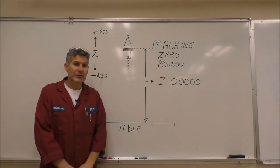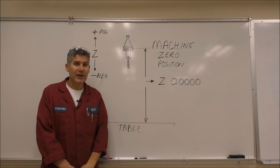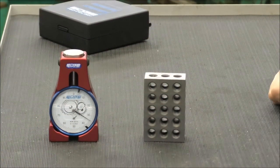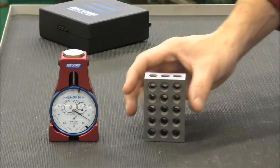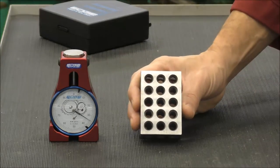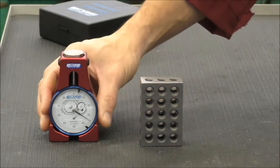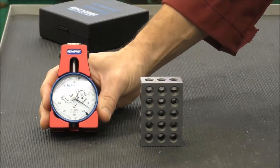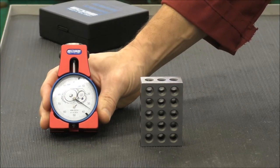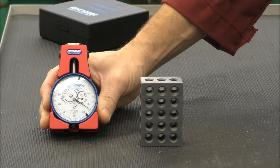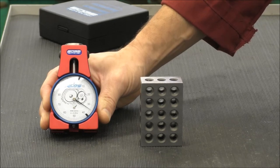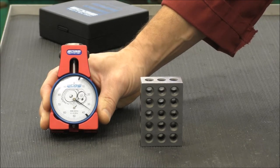Now let's go down to the shop and I'll show you how to do it on the CNC equipment. To set our tool length offsets, we're going to be using a 1-2-3 block — it's a very common machine shop item. Another item you can use is a height offsetter; this is a dial type. You can use this — it's very quick and easy to use, but they are expensive and they sometimes can get damaged.